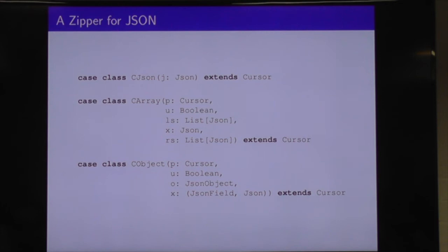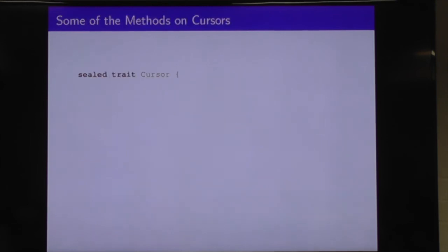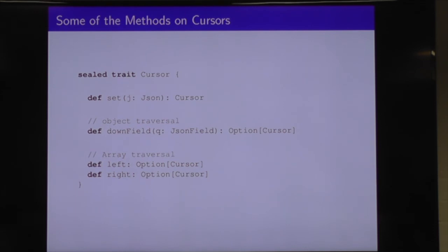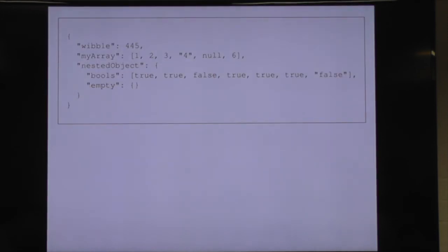Let's see what it looks like to use that. The blue things here are the foci — the JSONs inside each constructor. We can always set the JSON at our current focus with the set function. We can go down into a JSON field: downField takes a key and gives the value for that key if we're at an object. If we're in an array, we can go left or right. These are just some of the basic traversal functions for our JSON zipper, and there are many more.